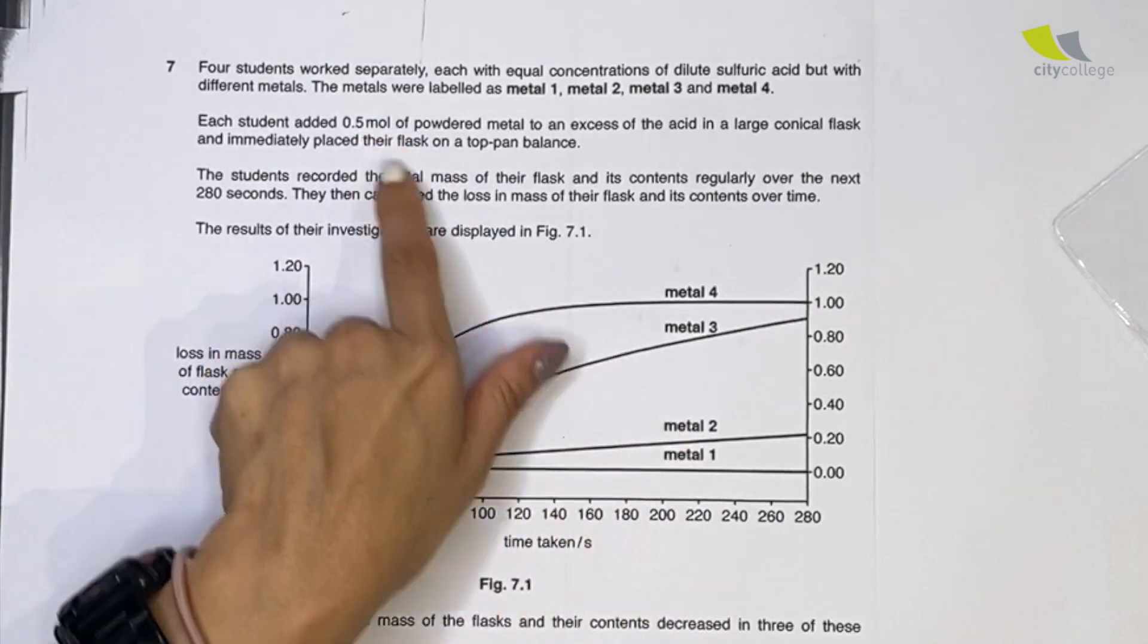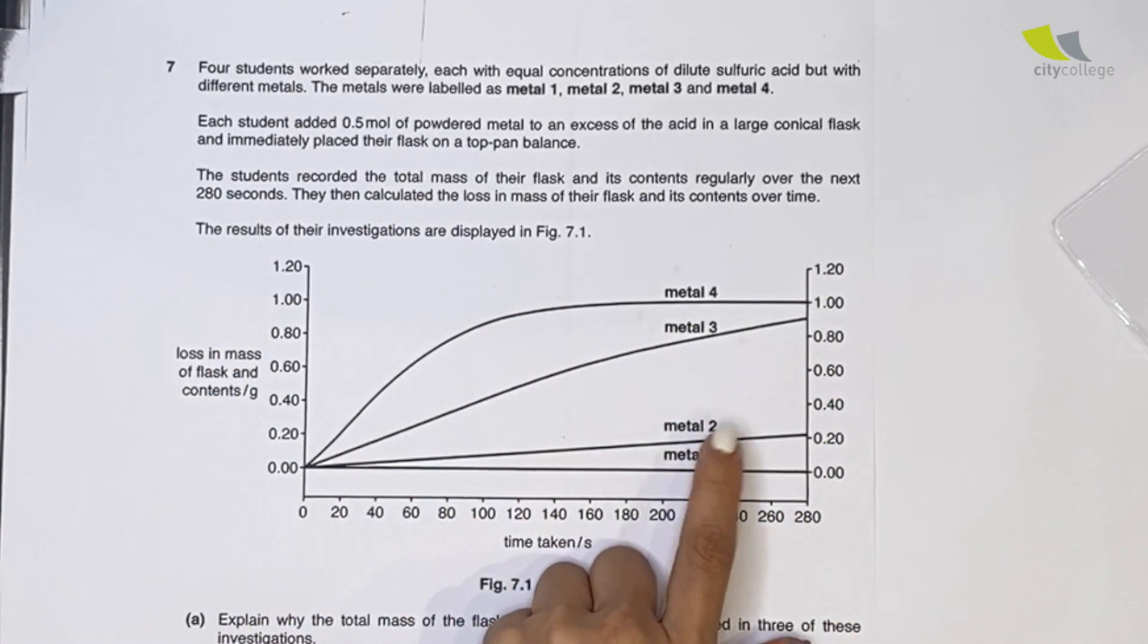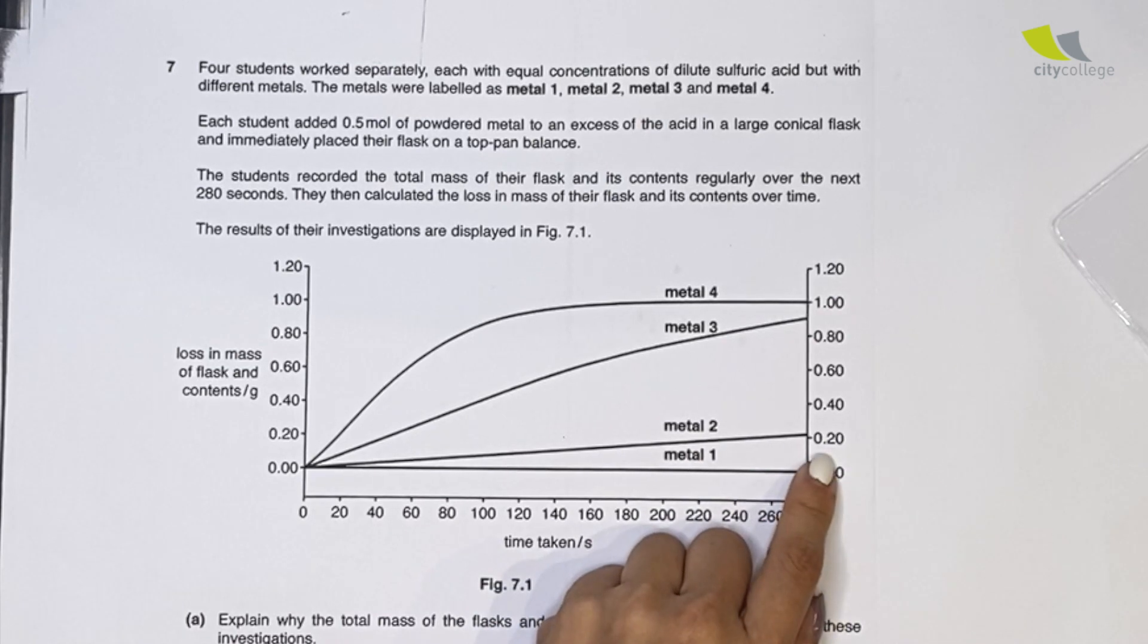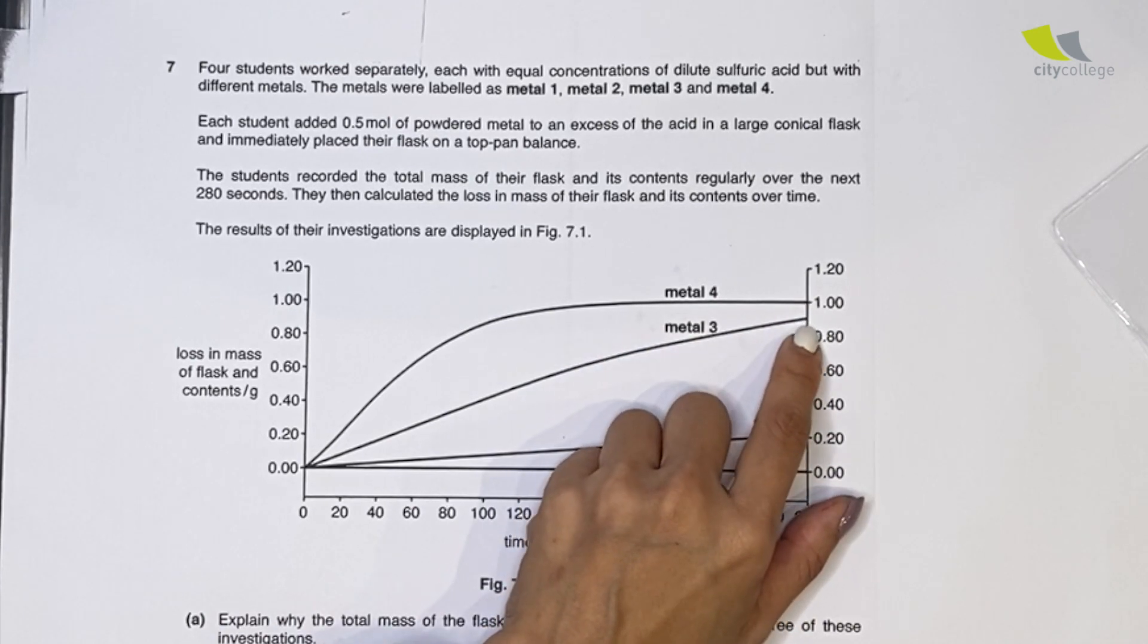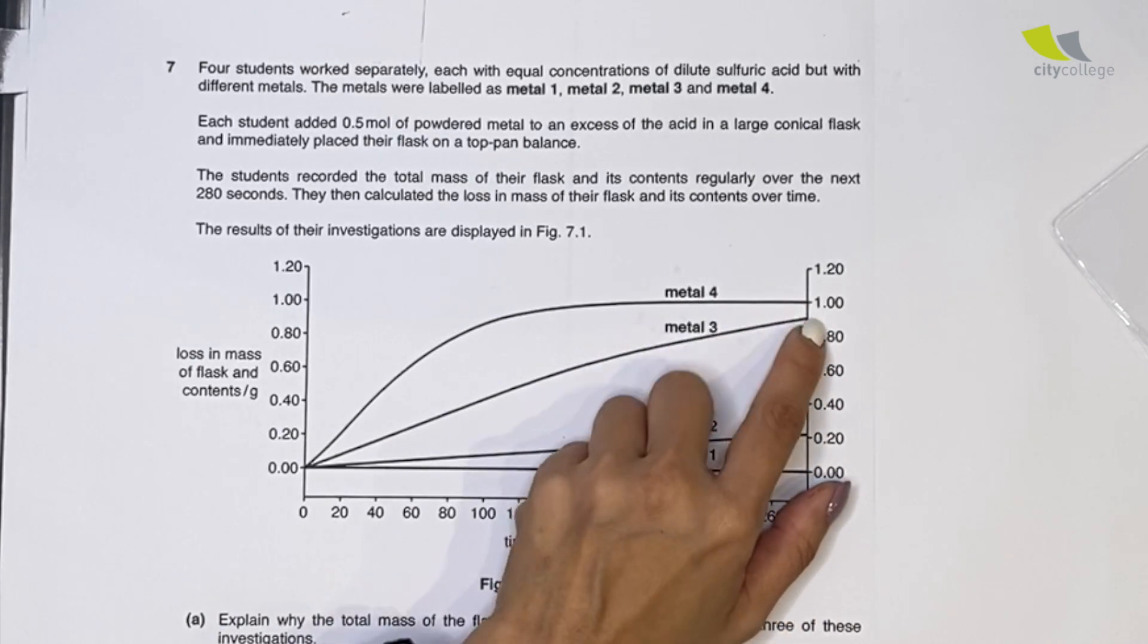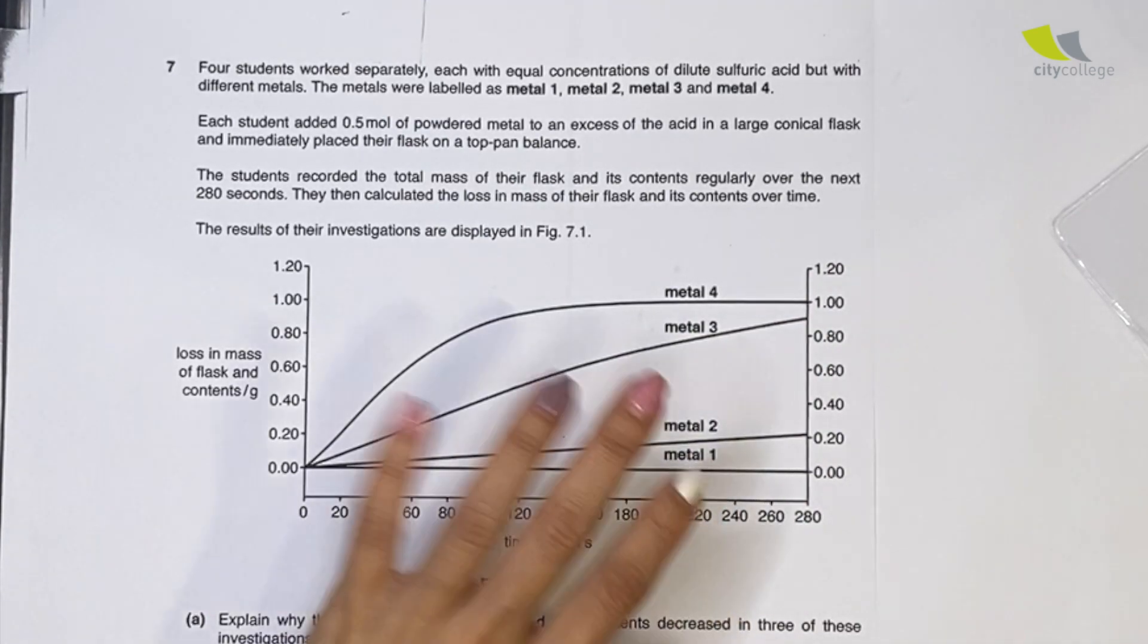Since this is acid plus metal, you notice that metal 2 will collect 0.2 volume of gas, this one will measure about close to 0.9, metal 4 is about 1. The only one that is not giving me any mass is metal 1 - it seems like there's no chemical reaction taking place, so it is a flat line.